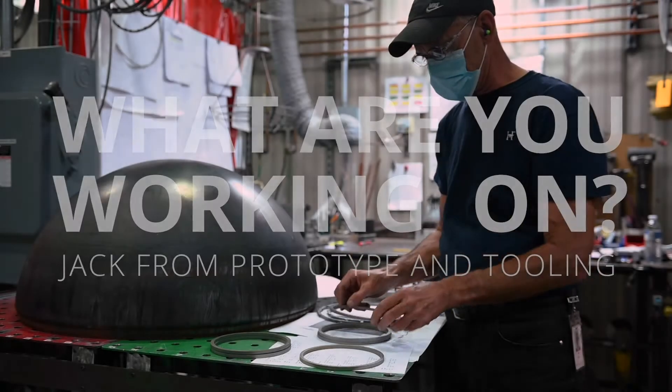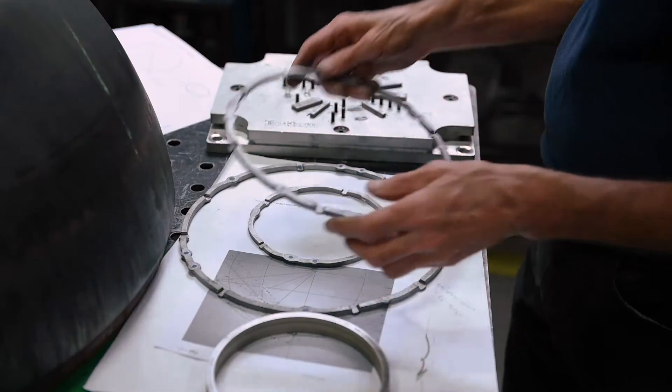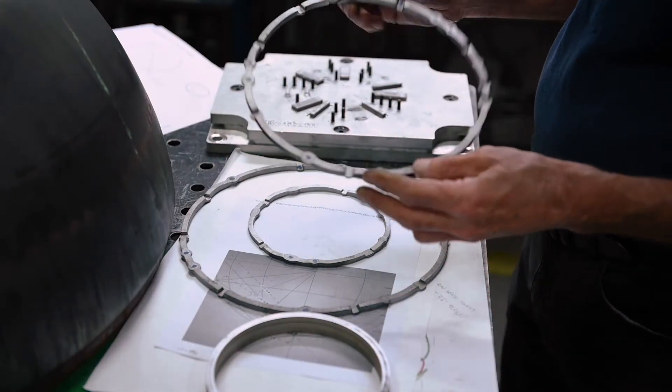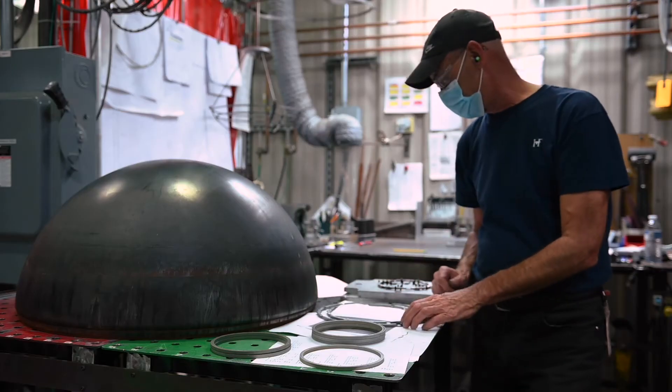We are working on some quarter-inch rings and different sizes. We're putting a square or a rectangular stamp in them. Going to be used on some new designs coming up this year.